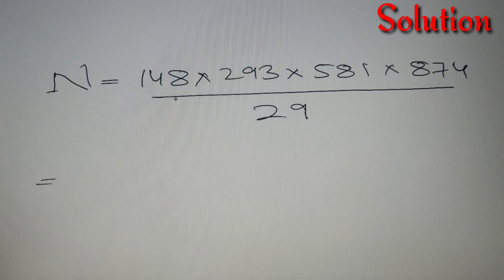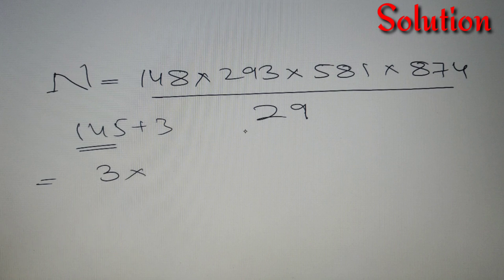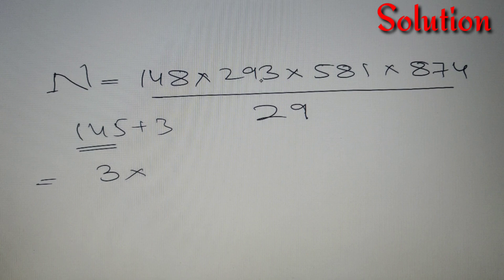The first number 148 is equal to 145 plus 3. I have taken 145 because 29 into 5 is 145. So on dividing 148 with 29 the remainder will be 3. The second number 293 is 290 plus 3 and 290 is divisible by 29. So the remainder is again 3.